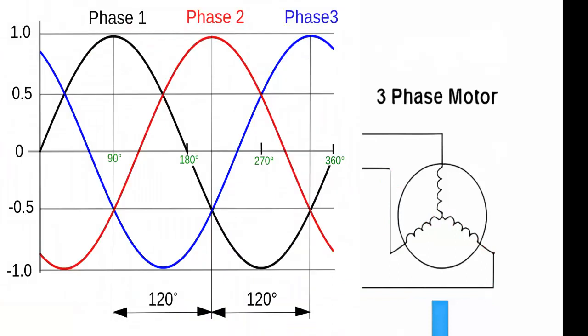In this way, the power supply of three lines is achieved in both directions, achieving three-phase alternating current.